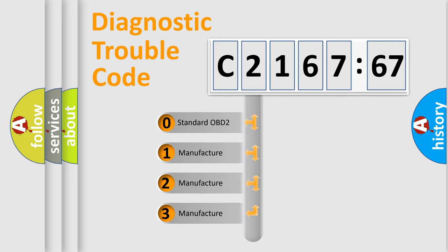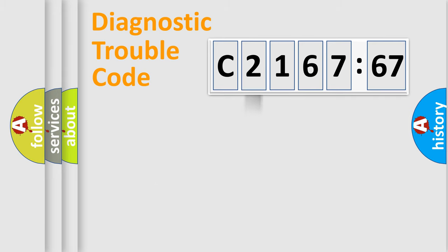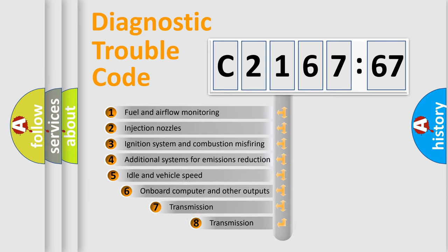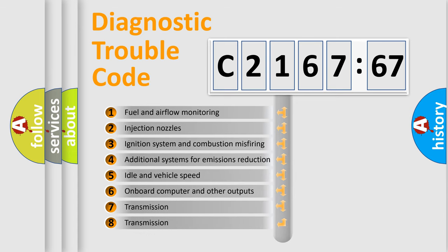This distribution is defined in the first character code. If the second character is expressed as zero, it is a standardized error. In the case of numbers 1, 2, or 3, it is a more specific expression of the car-specific error.